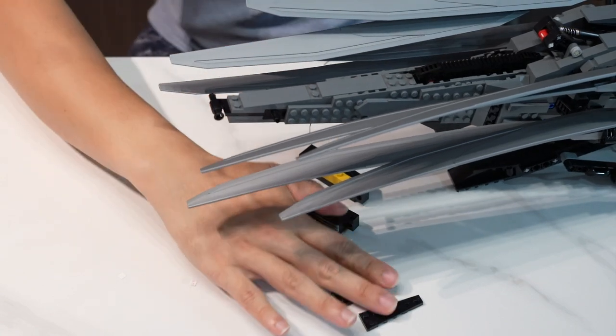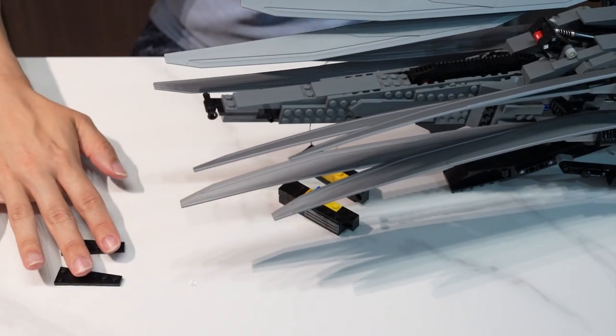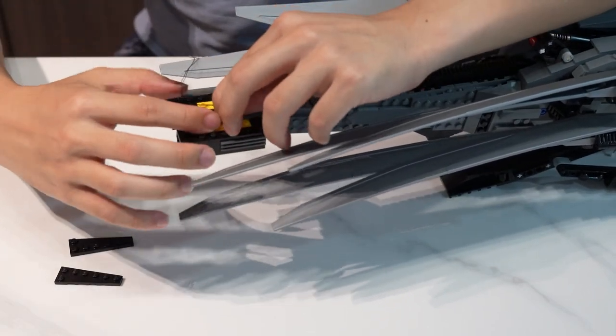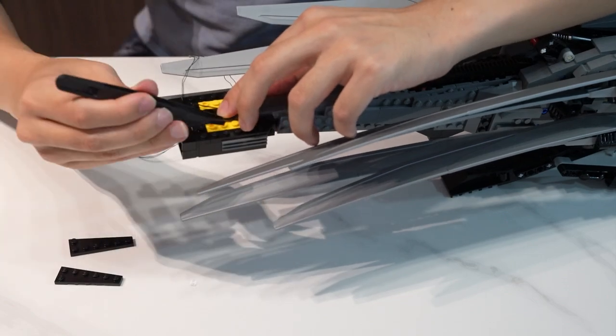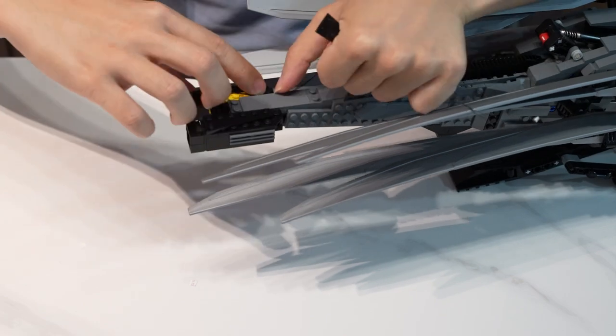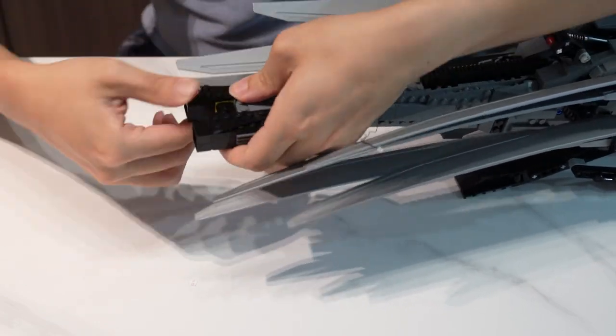After that, we can bring the Ornithopter back, install the tail pieces, and then run the longer wire on top, and cover them up with the wedge piece. Like so.